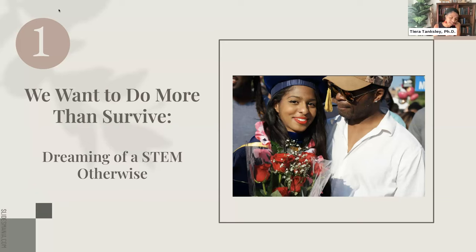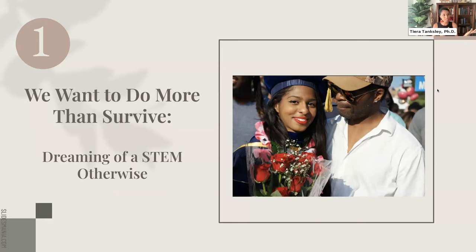When I think of my dad, I think: how do we change STEM systems so they are not spirit-murdering us? How is it possible to dream of a STEM otherwise? I personally don't want to funnel Black kids into STEM as it currently is — training them to make the same death-producing, eugenics-producing technologies we see in our neighborhoods, enduring in schools, creating all of these harms.